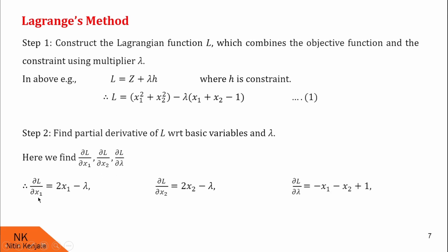∂L/∂x1 is obtained by keeping x2 and lambda constant. The derivative of x1² is 2x1; derivative of x2² is 0 (constant); derivative of −λx1 is −λ; and the remaining terms are zero since they are constant. So ∂L/∂x1 = 2x1 − λ. On similar lines, ∂L/∂x2 = 2x2 − λ.